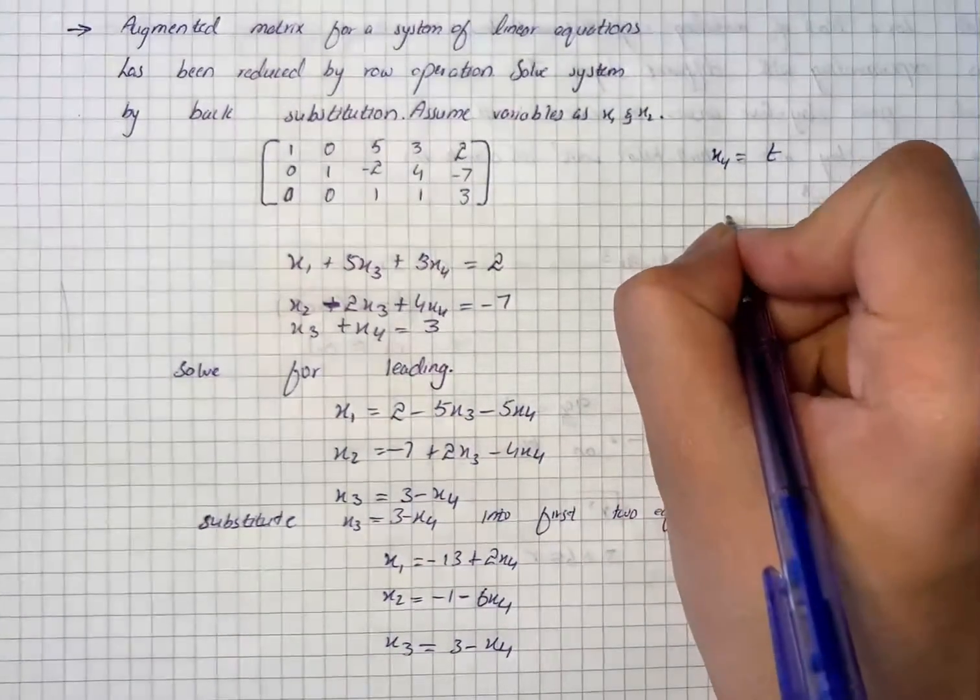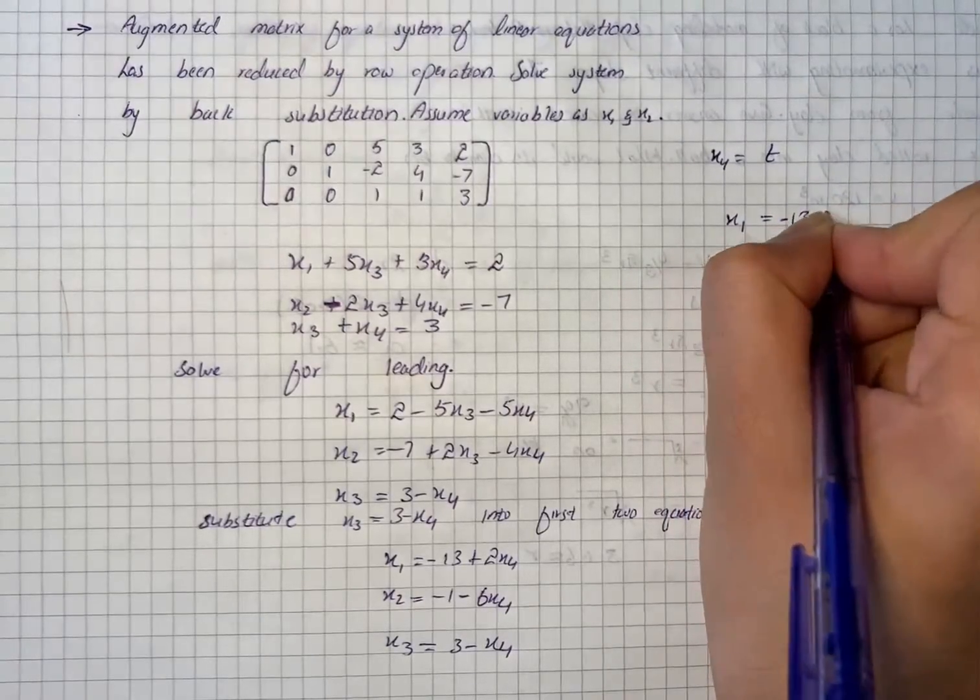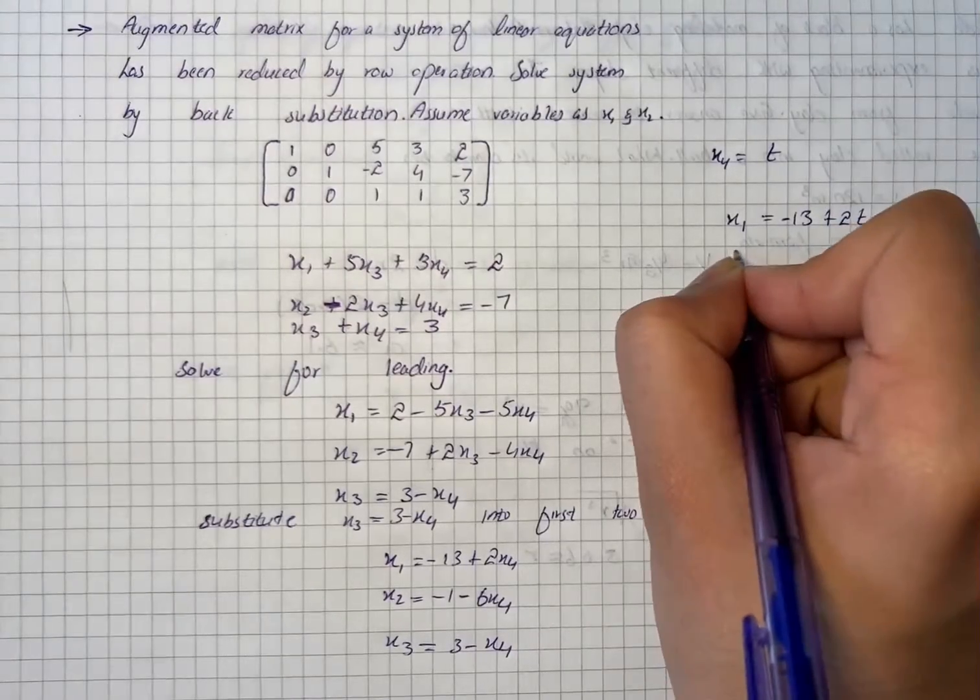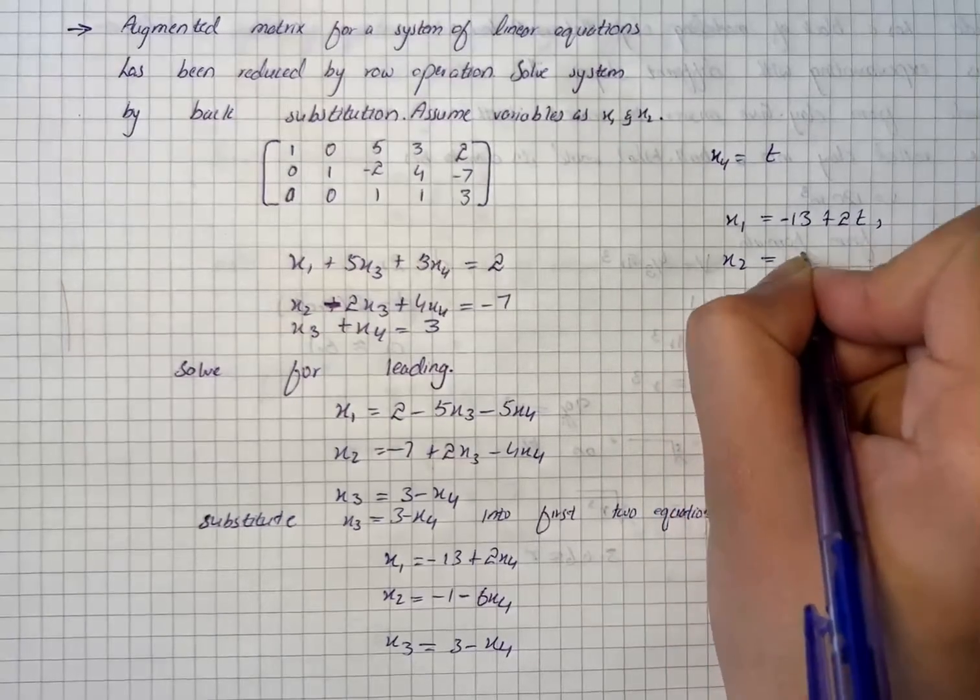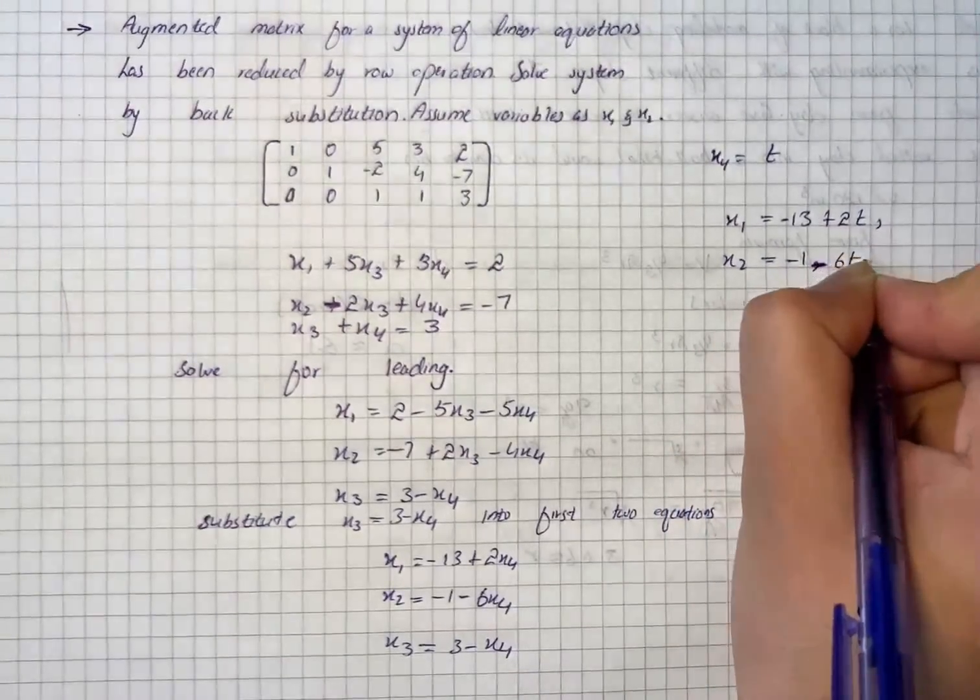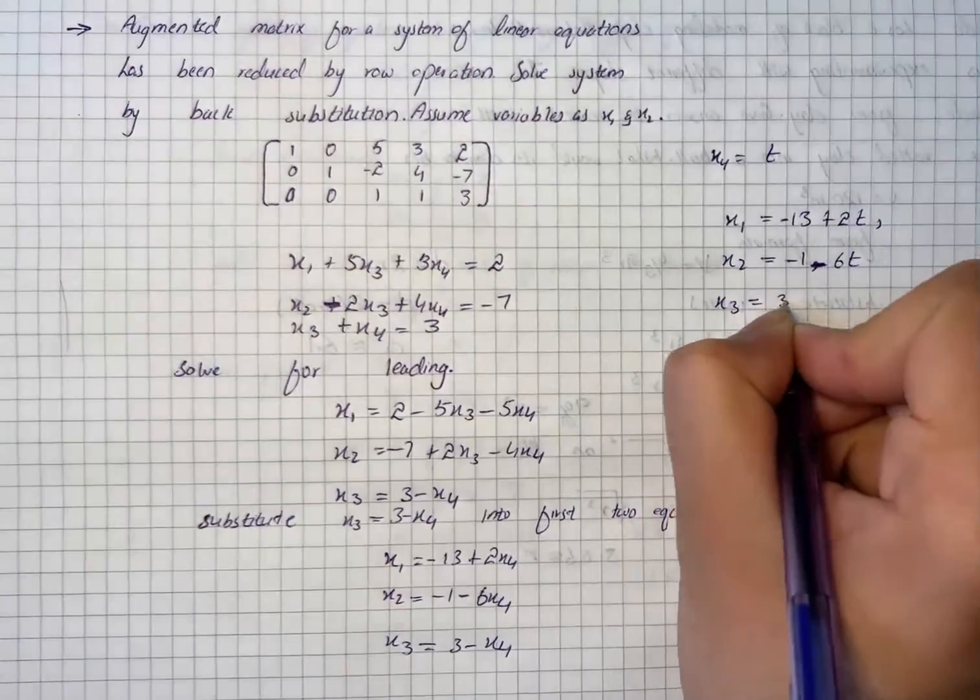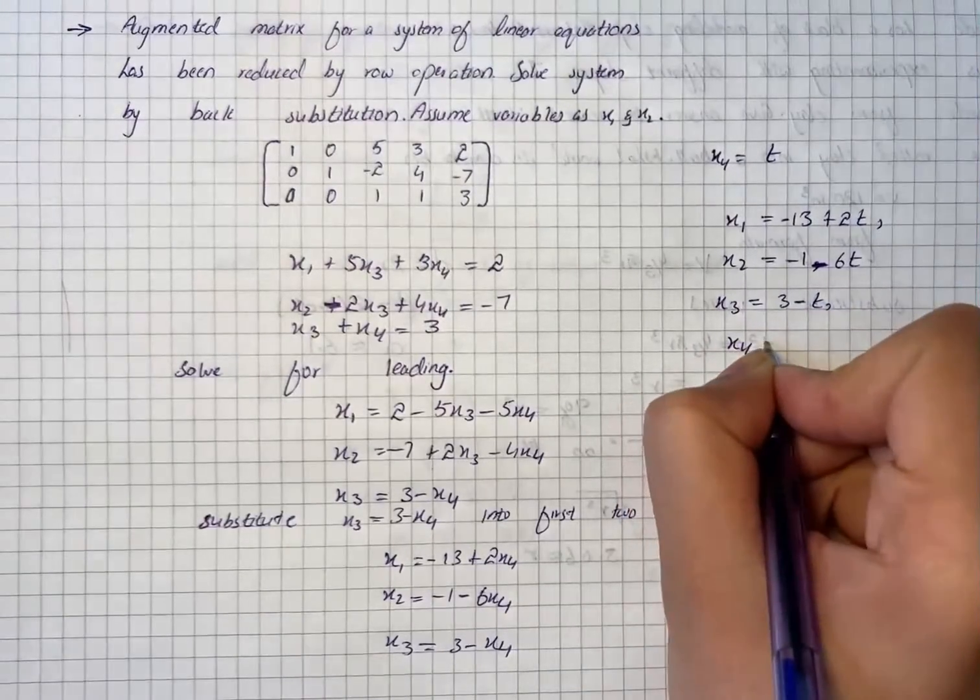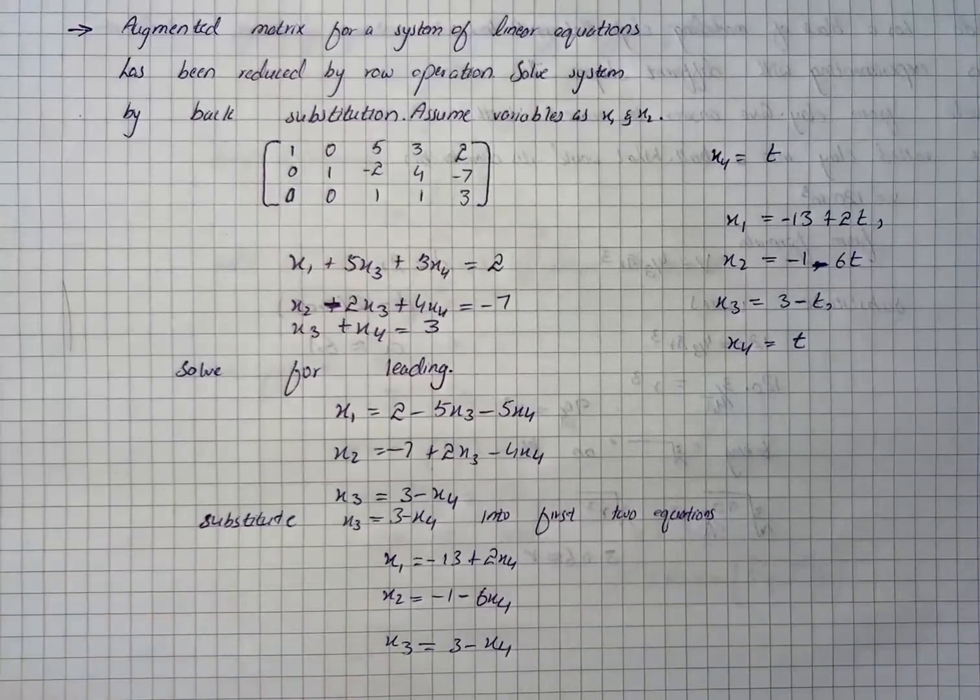So parametric equations would be x1 equals minus 13 plus 2t, x2 equals minus 1 minus 6t, and then we have x3 that is equal to 3 minus t, and then we have x4 that is equal to t. So here is our solution for the given question.